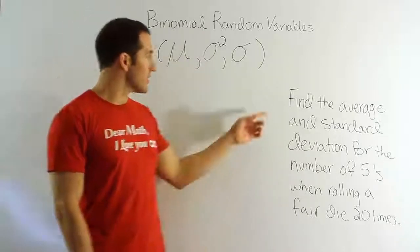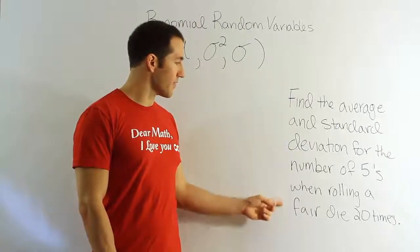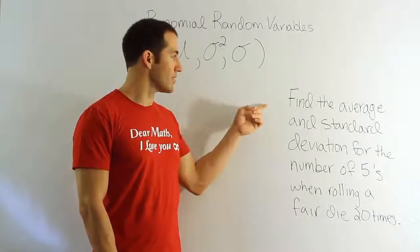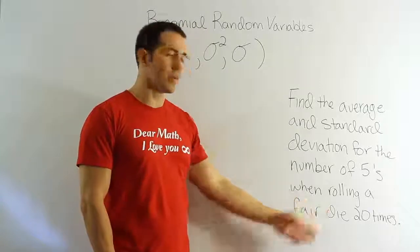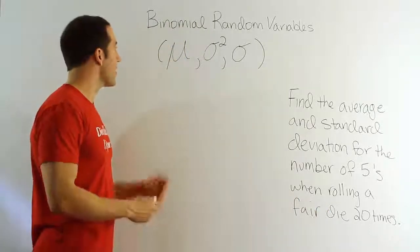The scenario is that we want to find the average and standard deviation for the number of fives when rolling a fair die 20 times. So we're going to roll a die 20 times, we're going to count the number of fives on it, and we want to know what's the average number of fives and what's the standard deviation that we would expect when we do an experiment like this over and over again. Let's talk about the mean.